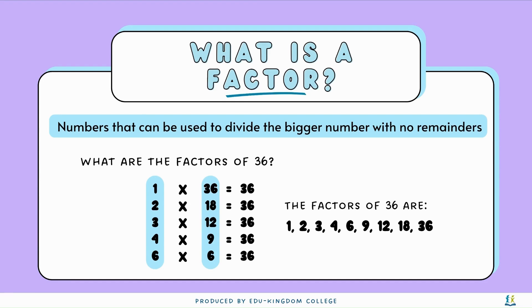So the factors of 36 are 1, 2, 3, 4, 6, 9, 12, 18, and 36. Numbers that times together to make 36 are called factor pairs. So 1 and 36 will be a factor pair, 2 and 18, 3 and 12, and so on.